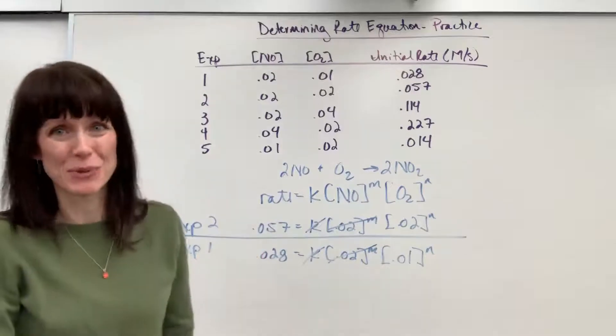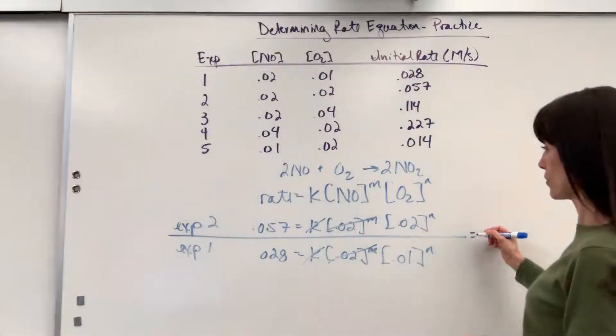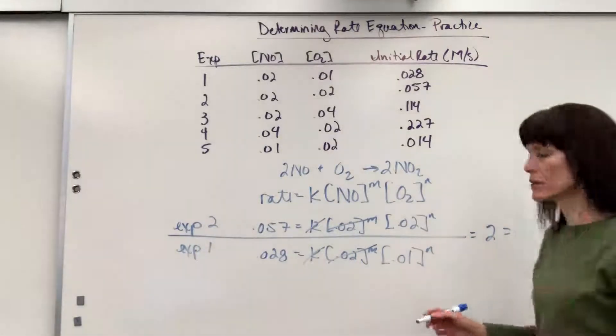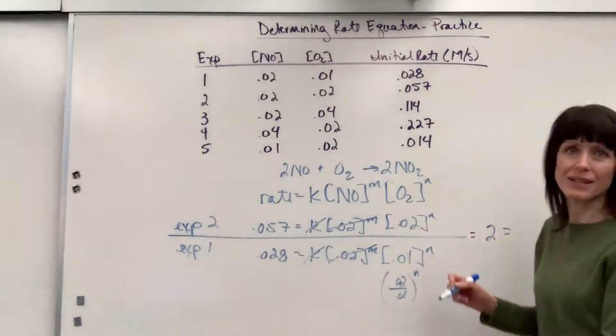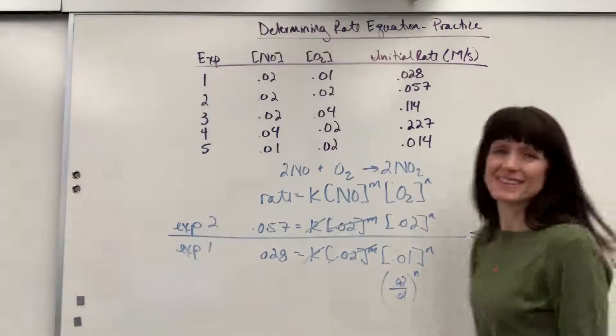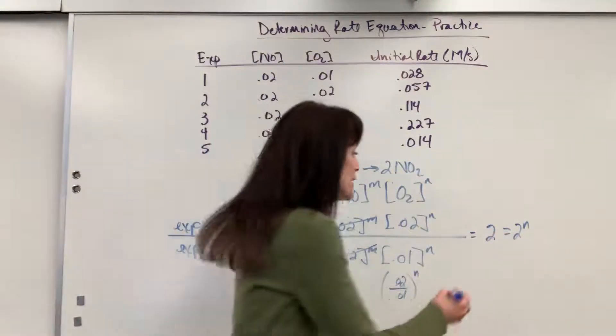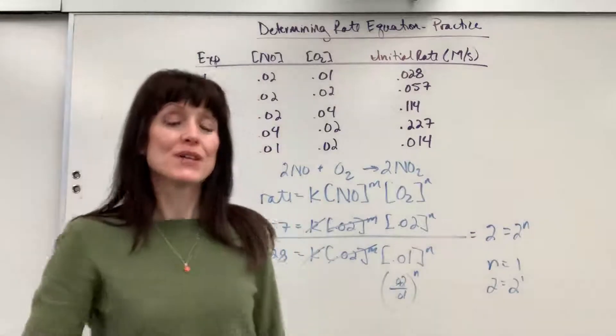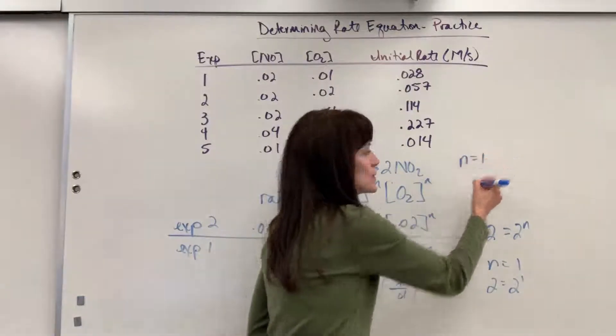So notice we rigged it. This totally works. The 0.02 to the M cancels out, K cancels out. That will be the same value. And now it's just an algebra problem. So we're going to have 0.057 divided by 0.028. That's really close to 2 equals 0.02 divided by 0.01. Now just a little reminder on exponents, 0.02 divided by 0.01 all raised to the N is the same thing. So this is going to be 2 to the N. So here's a challenge. What is N? What value does N have to be for that to be a true statement? Well, N must be 1. 2 equals 2 to the 1 power. Nice. So N is first order. N equals 1.